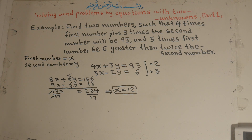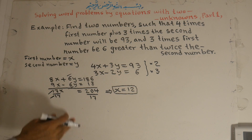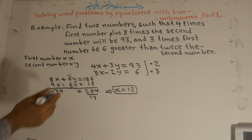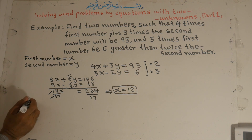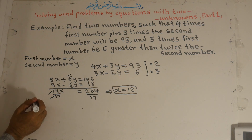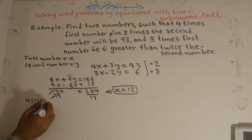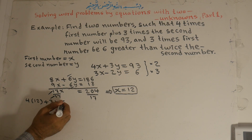Now we plug the value of x into one of the equations — equation number one. In place of x, we write 12: four times twelve plus 3y is equal to 93.